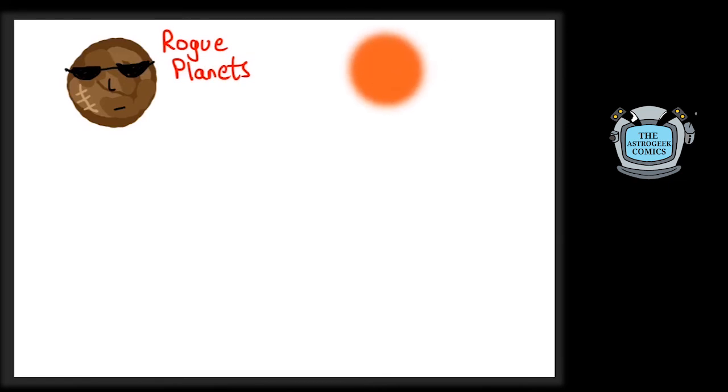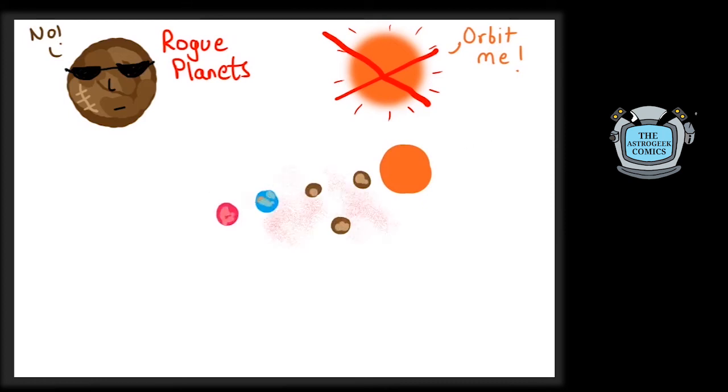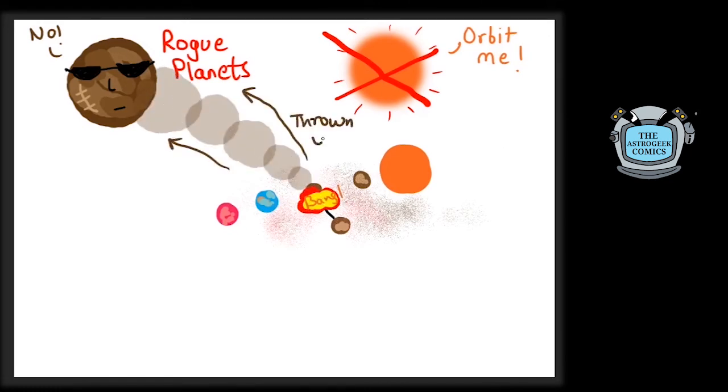This class of planets stand out because they do not orbit any star. In fact, they are not at all a part of any planetary system. These planets are thought to have been formed like usual planets, but later flung out of their system due to the interplay of gravity of other planets.